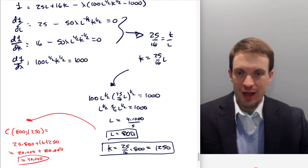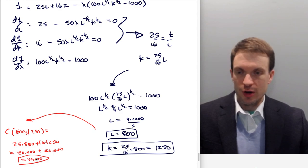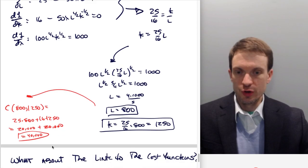So that's labor. If we have L equals 800, how do we find capital? Let's just use this relationship. So 25 over 16 times 800 is going to give us 1250. We can use this to get the cost. We're trying to find the minimum cost to produce this amount. It's just 25 times 800 plus 16 times 1250. You should recognize this as both our value function and the objective function that we are minimizing. So our minimum cost to produce these 1,000 units is 40,000.